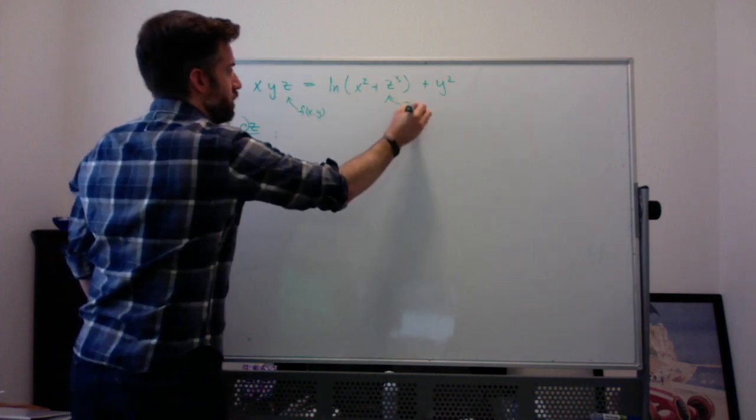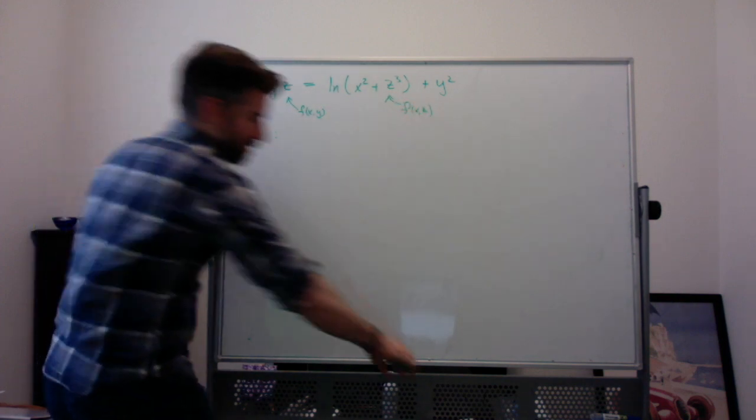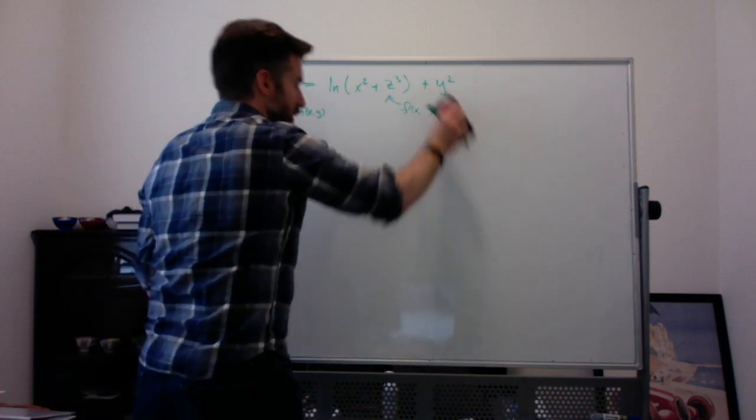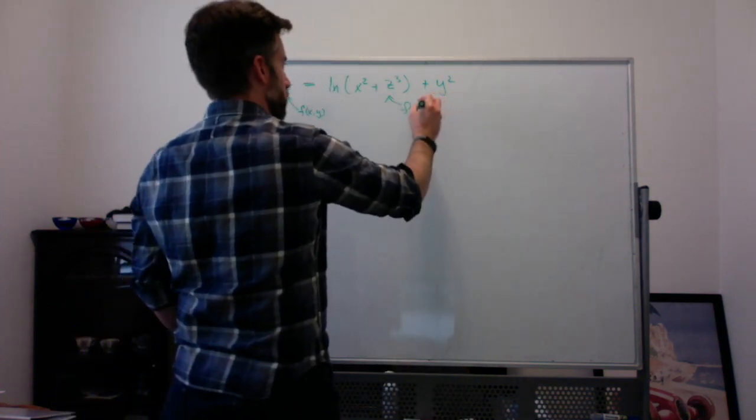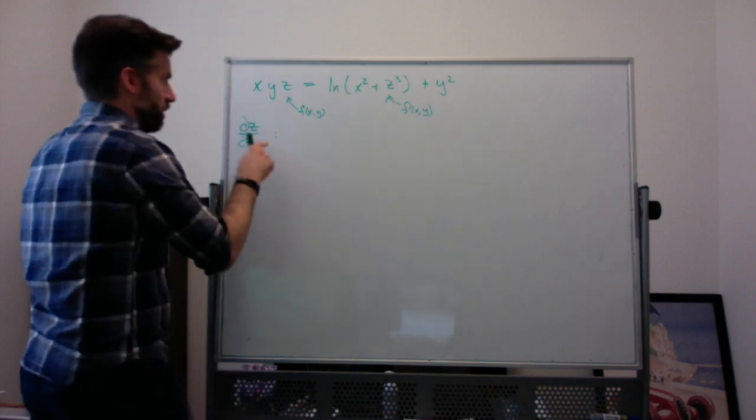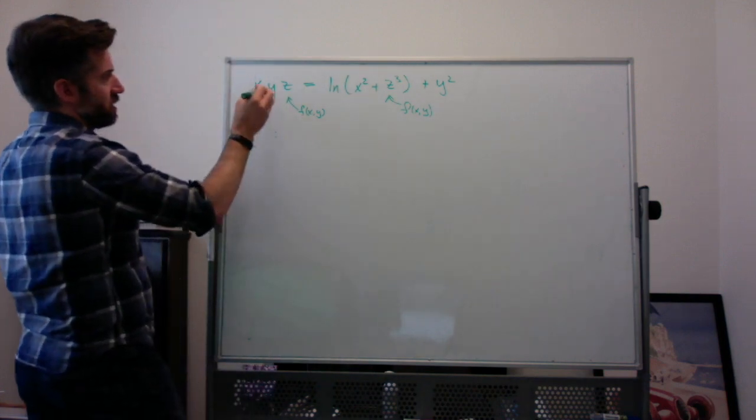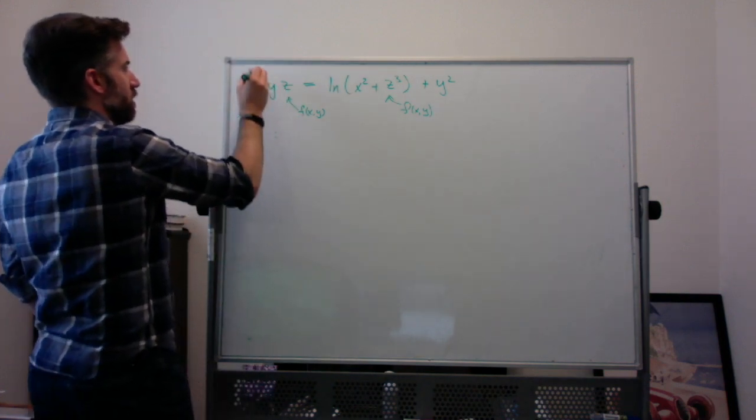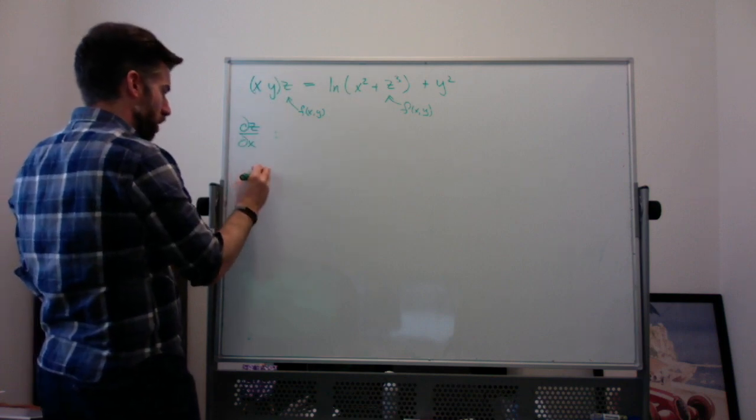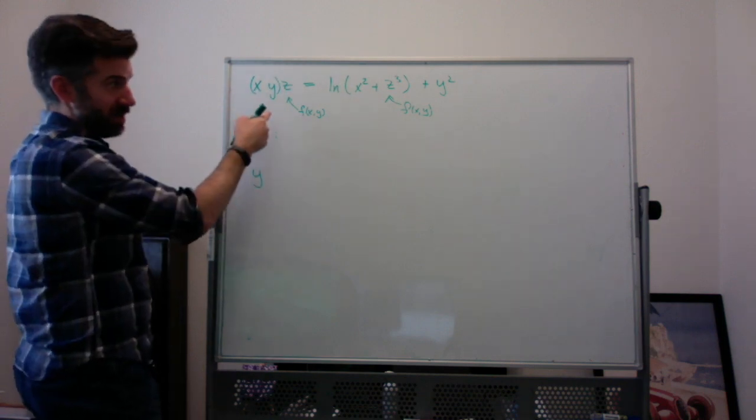So when we differentiate z with respect to x or z with respect to y, we have to think of it as really some function of x and y. So when we take the partial with respect to x, I'm going to think of this as xy times z. So I have the derivative of xy, which is just y, right? The derivative of x is 1 and y is a constant.